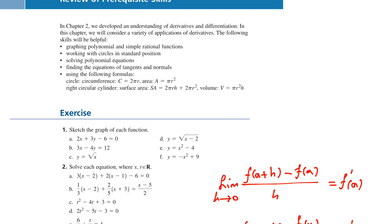What we need in Chapter 3 is graphing polynomials and simple rational functions, working with circles in standard position, solving polynomial equations, and finding the equation of tangents and normals. We are also going to use formulas such as circumference of a circle, area of a circle, cylinder, cube, and sphere.